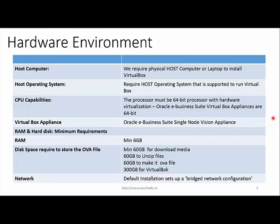The RAM requirement is minimum 6 GB, but I'm using 8 GB on my laptop. For disk space, minimum 60 GB is required to download the media, then we need another 60 GB to unzip, and we need to create one OVA file from the unzipped media. We then need another 300 GB for VirtualBox. For network, we are going to use the default bridge network configuration.